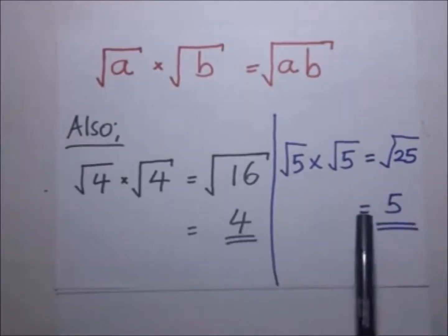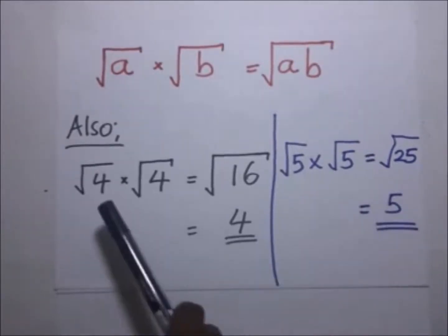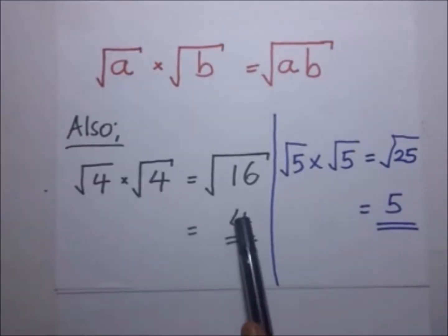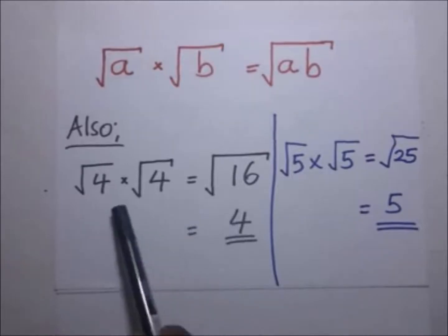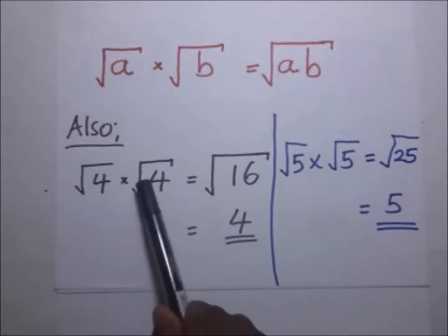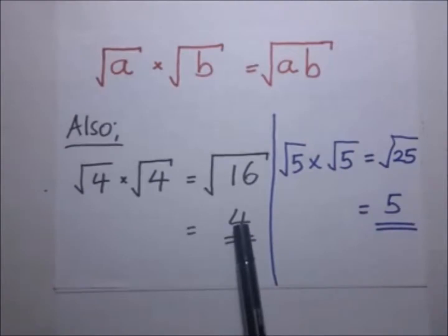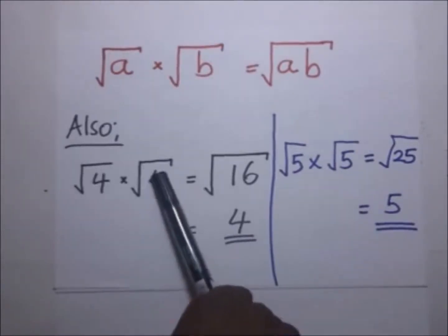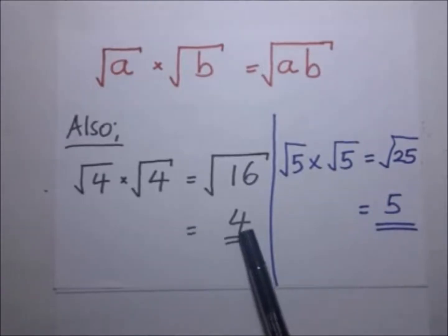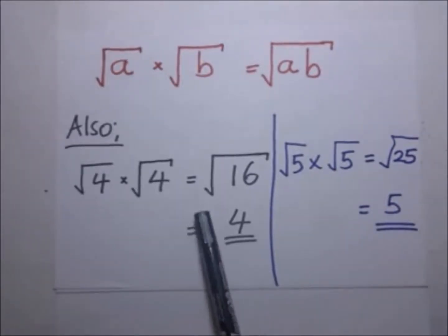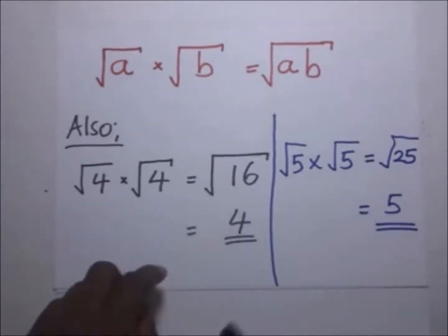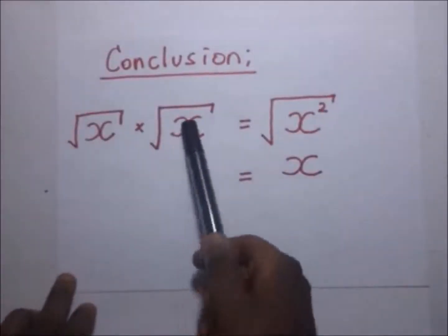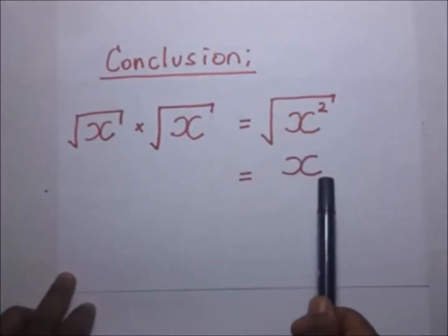This brings us to another conclusion. For example, square root of 100 times square root of 100 gives 100. Square root of 20 times square root of 20 gives 20. Square root of 1000 times square root of 1000 gives 1000. In general terms, √x × √x = x.